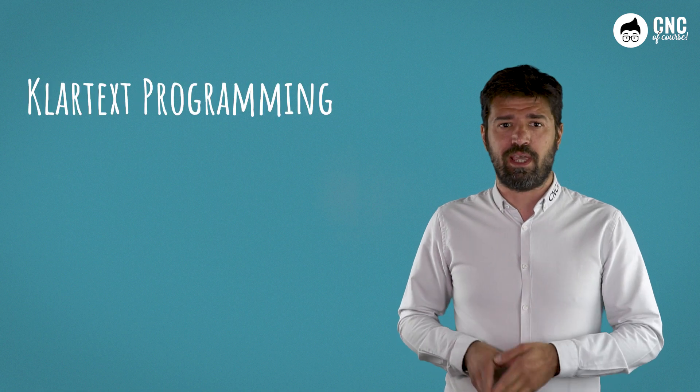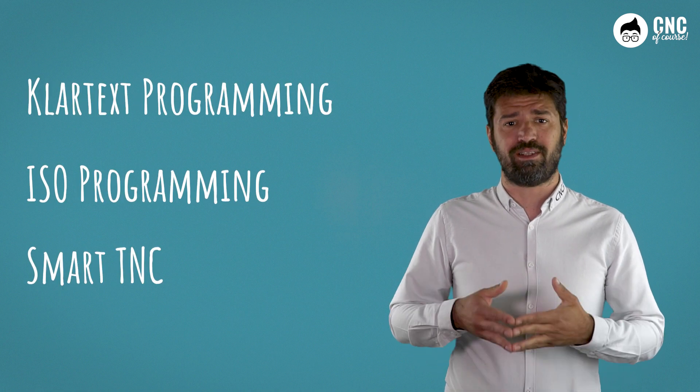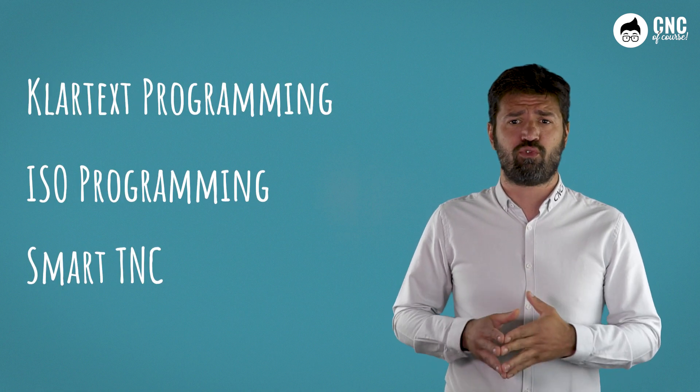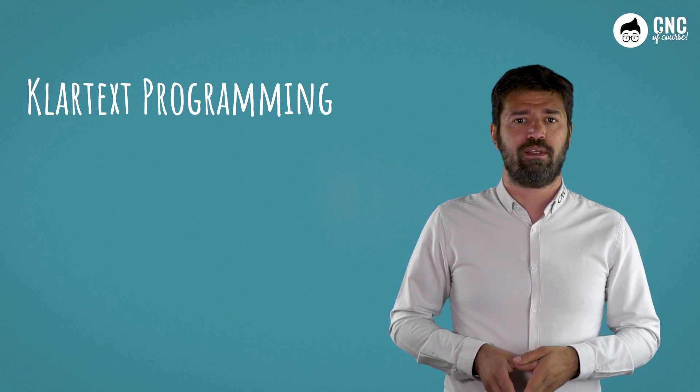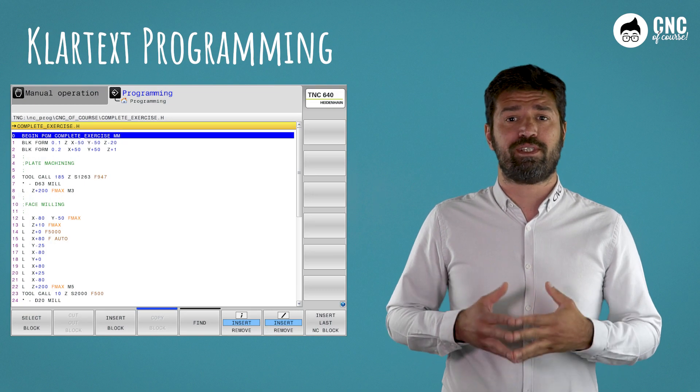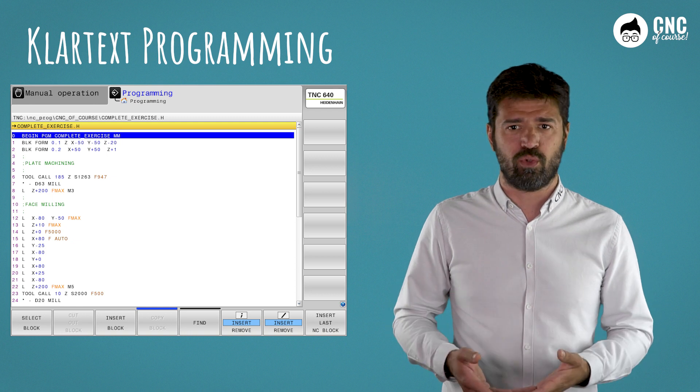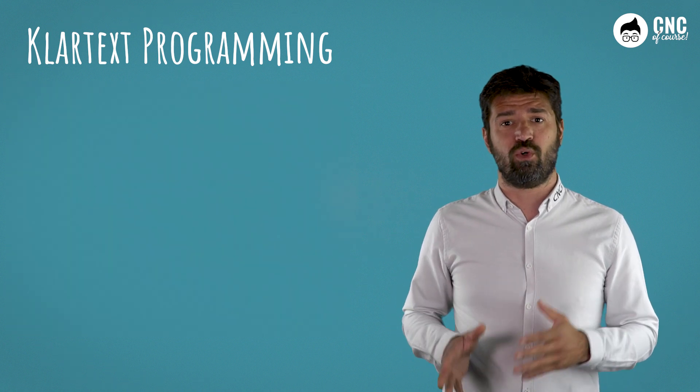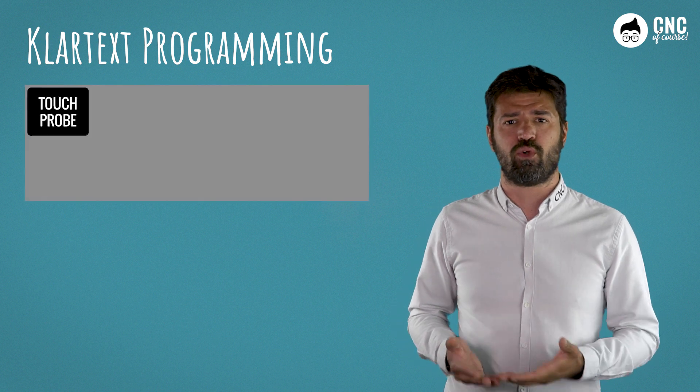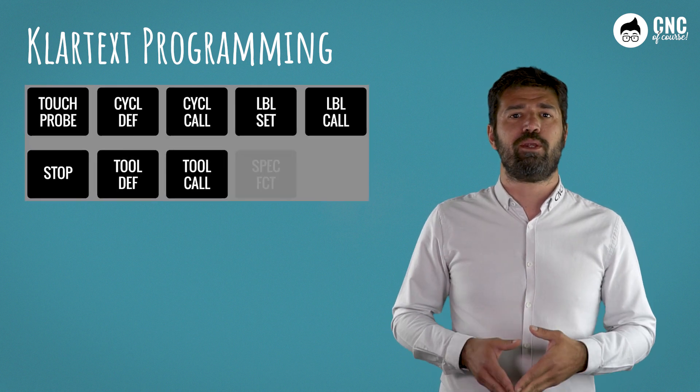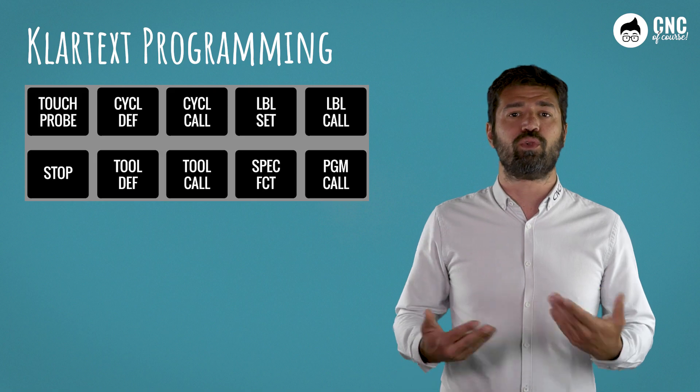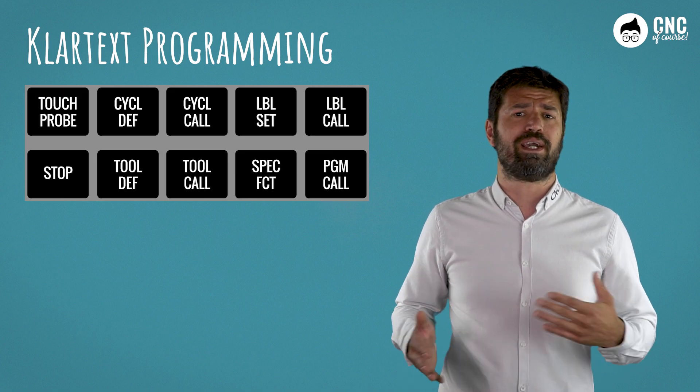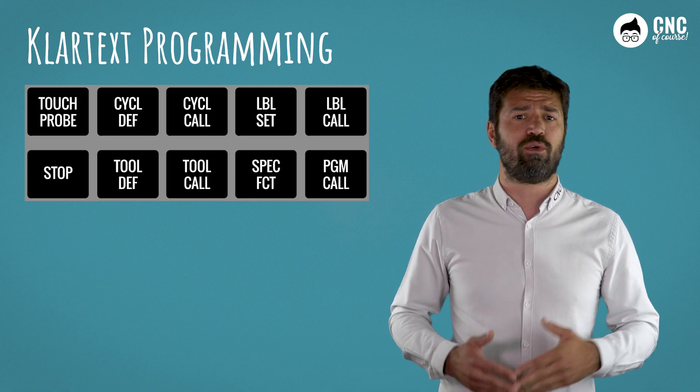Heidenhain provides three different languages: the Klartext programming, the ISO language, and the Smart TNC, but this can only be edited on 530 models. Heidenhain's Klartext programming is conversational, meaning I give an instruction to the control and then answer the questions that are asked. The dialogue with control is initiated with this set of keys, through which you can enter the tool data, create and execute sub-programs, or define and launch fixed cycles.